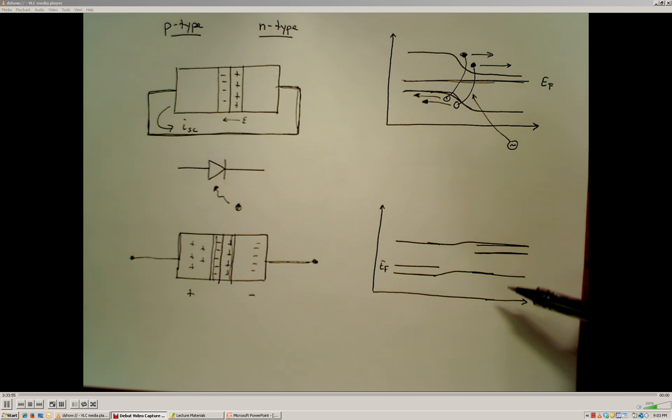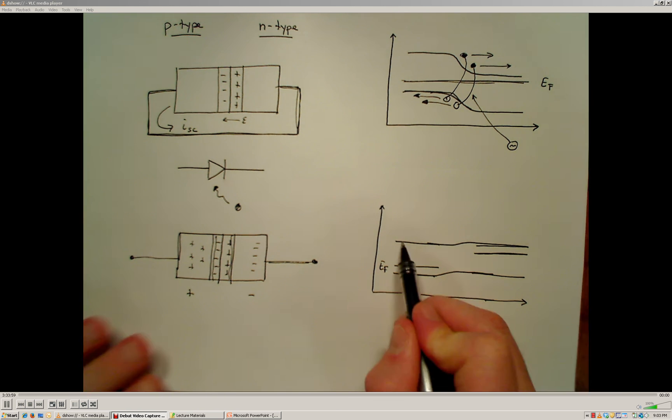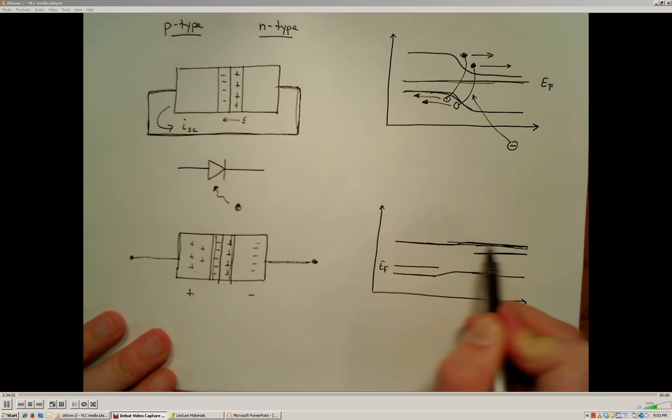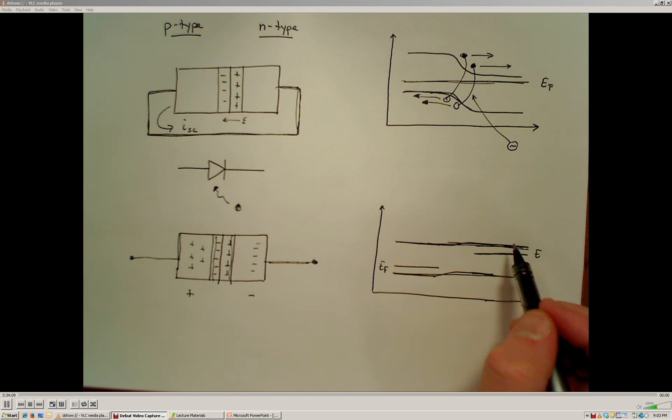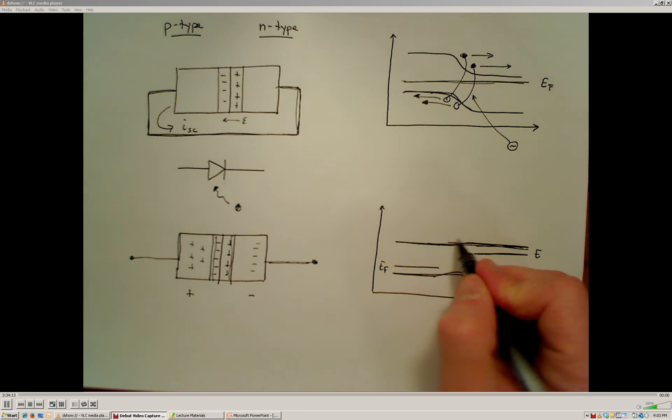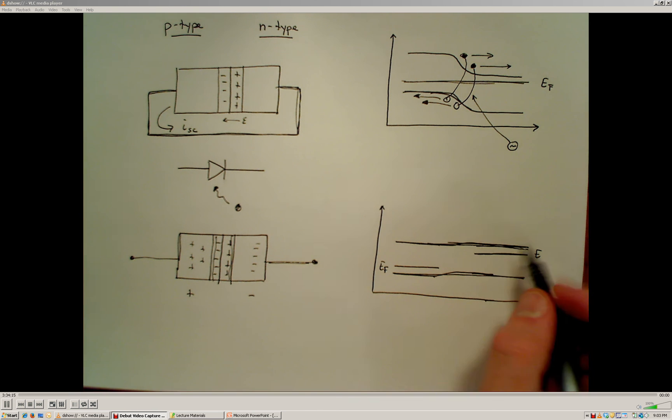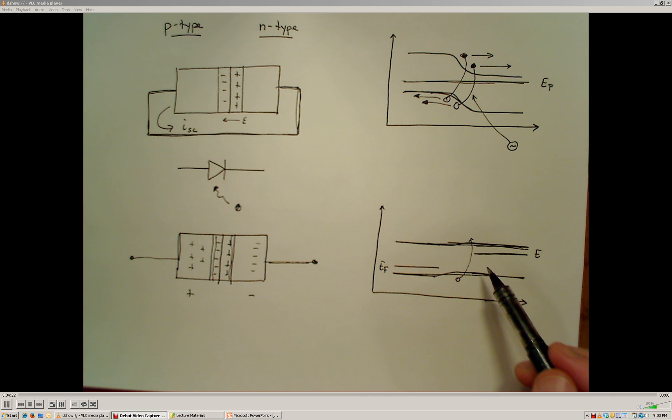And we see that this process will continue, and as this does, as we keep knocking and creating more and more electron-hole pairs, what we're actually going to do is, and this isn't drawn perfectly here, but what we're actually going to do is we're going to lower this energy barrier until the energy barrier becomes essentially flat and electrons no longer have any reason to move when an electron-hole pair is created.